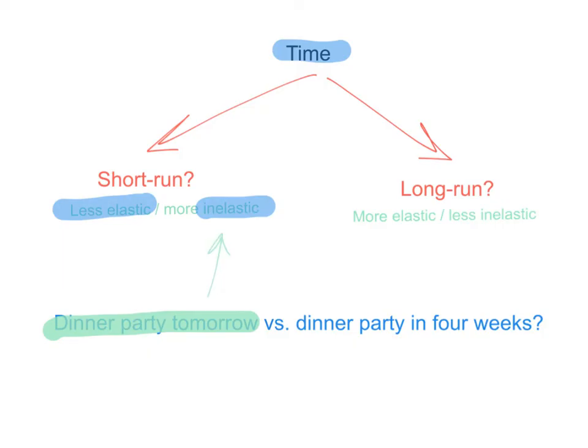But in the long run, because consumers take time and after a while they adjust their spending habits, demand in the long run tends to become more elastic or less inelastic. For example, if your dinner party is in four weeks and you find out the price of your favorite hot sauce has doubled, that gives you four whole weeks to look for substitutes and to try them. So generally, in the long run, demand becomes more price elastic or less inelastic.